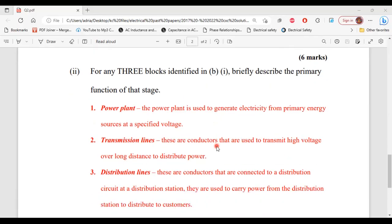And the third stage that was selected is the distribution lines. These are conductors that are connected to a distribution circuit at the distribution station. They're used to carry power from the distribution station to distribute to customers. So that's it for part two of B, and that's it for this question.